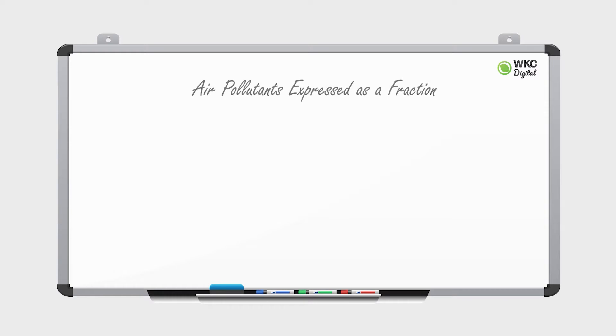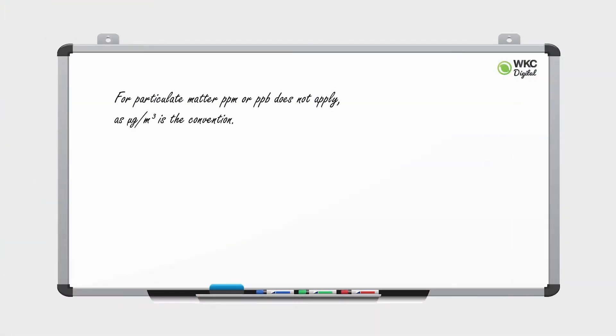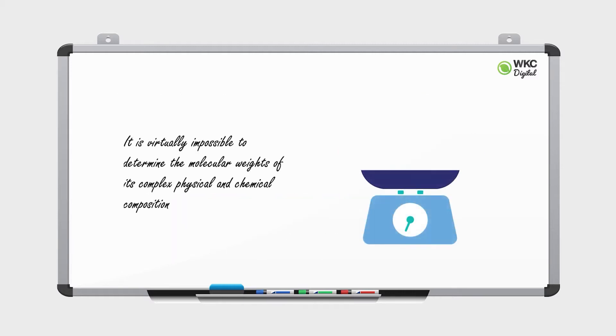An air pollutant can be expressed on a mass fraction or volume fraction basis. For air pollutants that are gases, parts per billion or parts per million by volume is typically used. Pollutant concentrations can also be expressed as micrograms per cubic meter — i.e., a millionth of a gram per cubic meter of air. For particulate matter, parts per million or parts per billion does not apply; micrograms per cubic meter is the convention, because it is virtually impossible to determine the molecular weights of its complex physical and chemical composition.